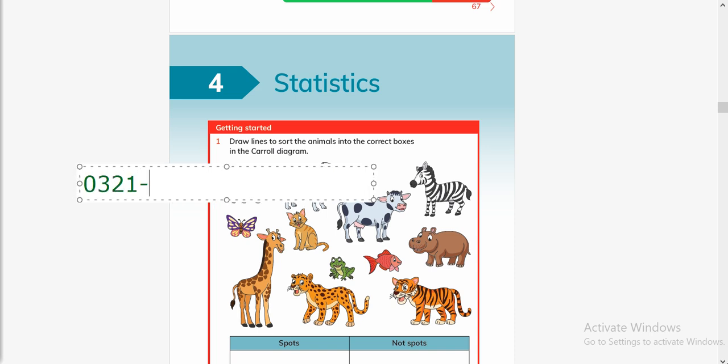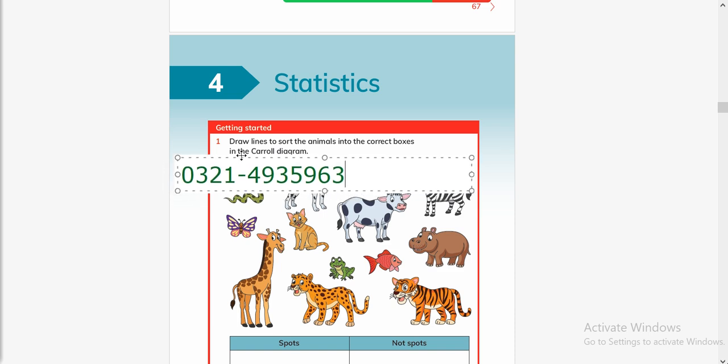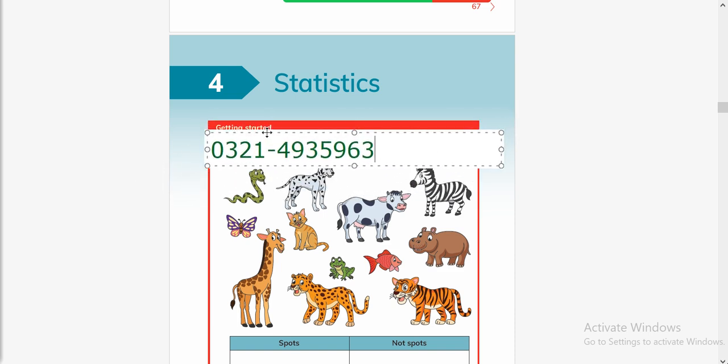0321-4935963, this is my WhatsApp number. You can contact me here. You can drop me a message along with the page number, the name of the book, and the picture of the book. If I don't have the PDF of that book, I'll take the picture and make the video for you, but for this you have to wait for at least one or two days.